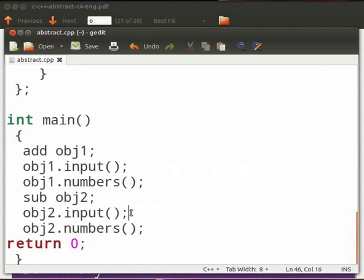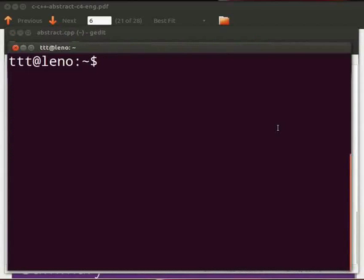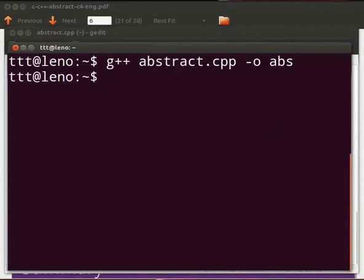Now let us execute the program. Open the terminal window by pressing ctrl, alt and t keys simultaneously on your keyboard. To compile type g plus plus space abstract dot cpp space hyphen o space abs. Press enter. Type dot slash abs.